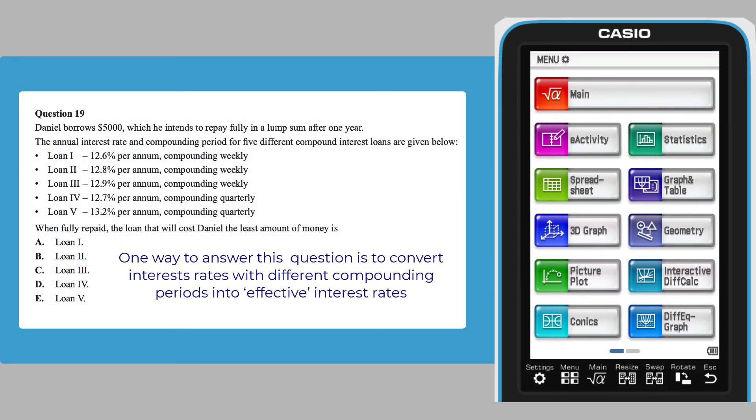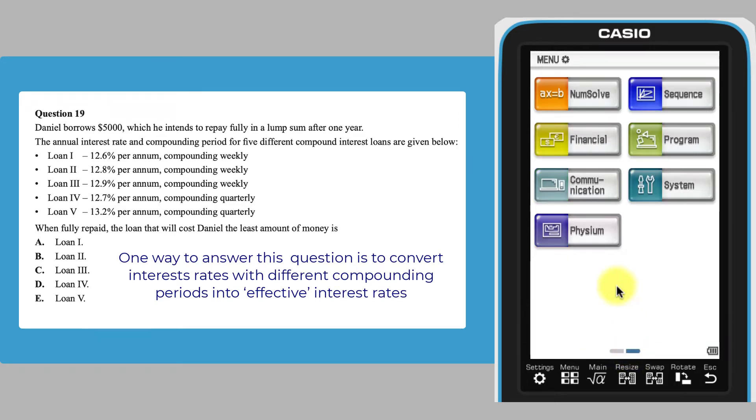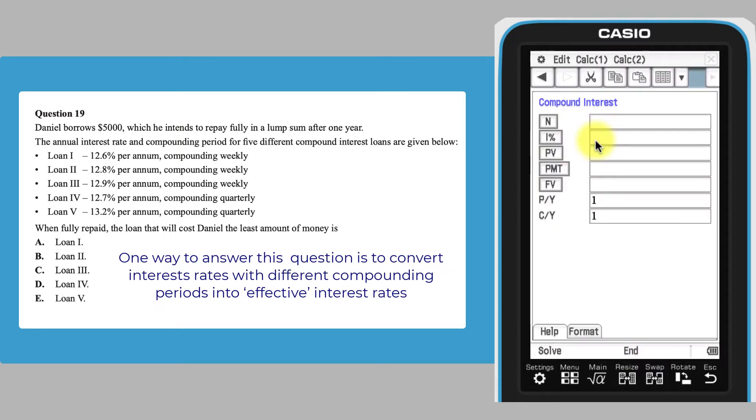The conversion of a nominal interest rate to an effective interest rate can be done using the ClassPad's financial app. The necessary command can be found under the Calc 1 dropdown menu.